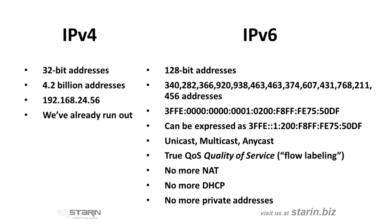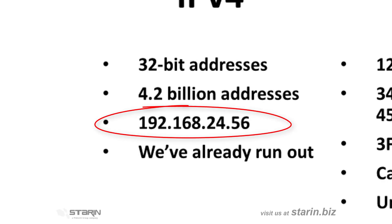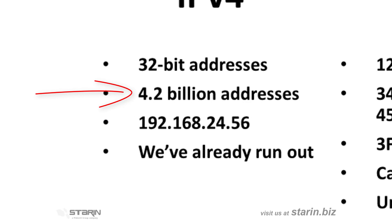IPv4 is the current standard in assigning IP addresses for network connected devices. As you know, every device you put on the network has to have a unique IP address. As you can see with this sample IP address, IPv4 uses a 32-bit address. That means that with each of these four three-digit numbers, 0 to 255, there are about 4.29 billion possible combinations.